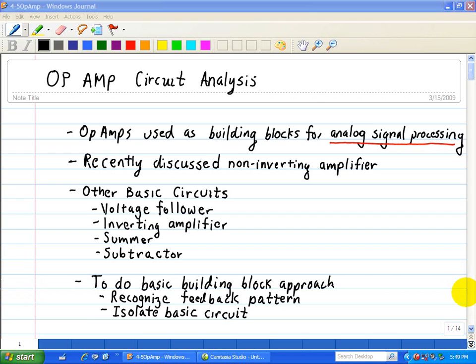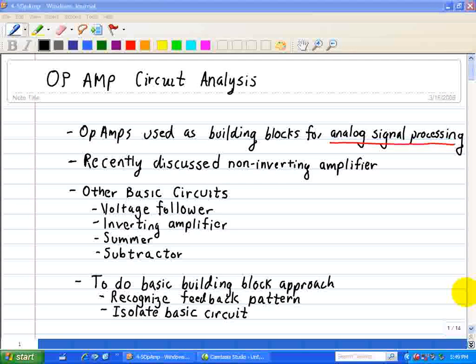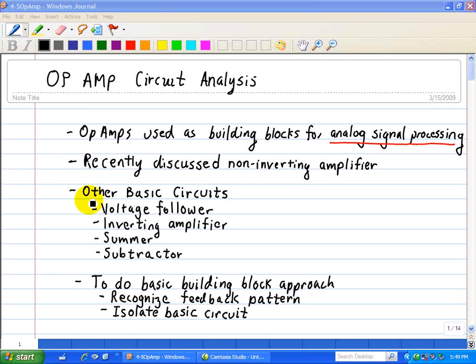Here we're going to introduce op amp circuit analysis using examples that are building blocks for analog signal processing systems. We discussed this earlier when we talked about the non-inverting amplifier itself. Now some of the other basic circuit blocks include the voltage follower, the inverting amplifier, the summer, and the last one we'll discuss is the subtractor.